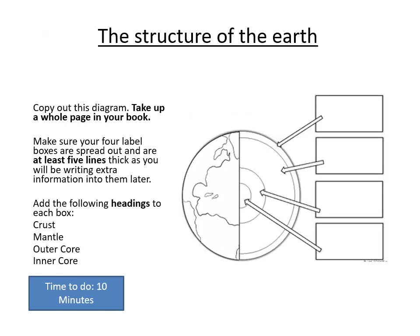Okay, grab a pencil and copy that diagram in your book. As it says, take up a whole page — this should be quite large. Grab your compass to draw nice neat circles and try to make this as accurate and neat as possible. The four boxes should be spread out and at least five lines thick, because you're going to write a title at the top of each one and then some bullet points and notes underneath. Add the following headings to each box: the crust, the mantle, the outer core, and the inner core. The video should have helped you to do that. Pause the video now.